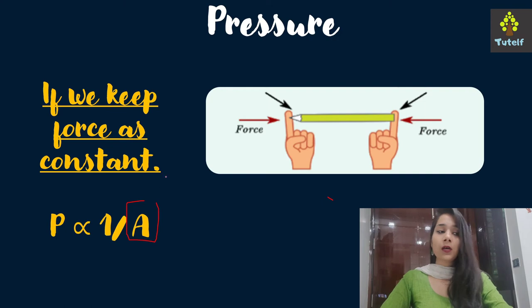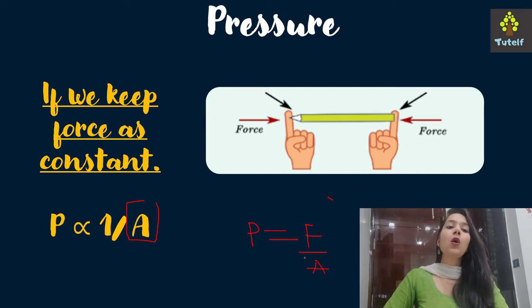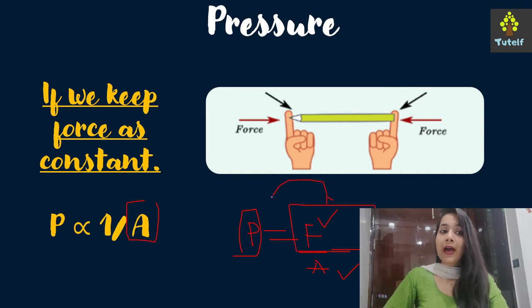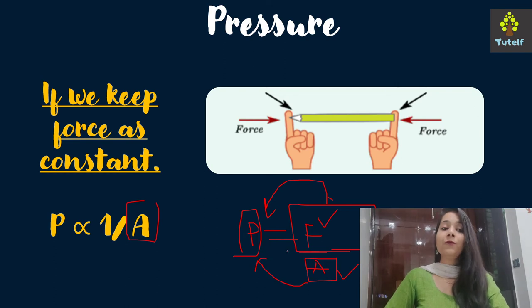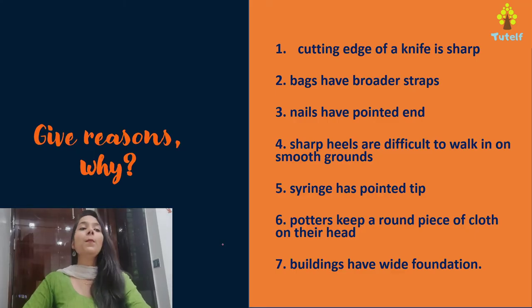To determine if variables are directly or inversely proportional: in the formula P equals F upon A, variables in the numerator are directly proportional to pressure and variables in the denominator are inversely proportional. So force is directly proportional to pressure, and area is inversely proportional to pressure.